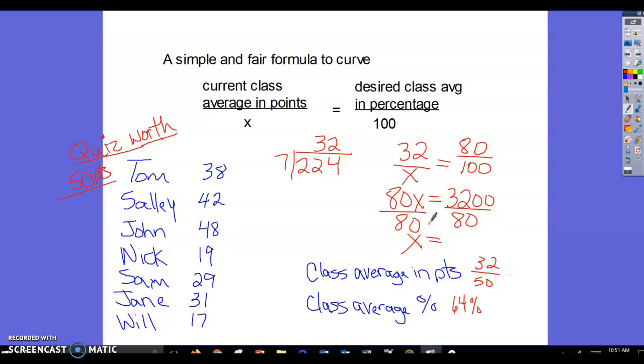3200 divided by 80 is 40. So what we're going to do is change x—we're going to change what the number of points is worth. The class still has an average number of points of 32, but now instead of 50, the total number of points is 40. And 32 divided by 40 is 80%—that's our desired class average. This way it rewards every student and we don't have to change each grade. We just change the total number of points that this assignment or assessment is worth.